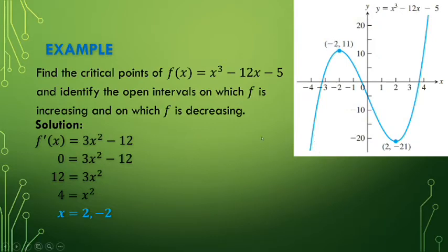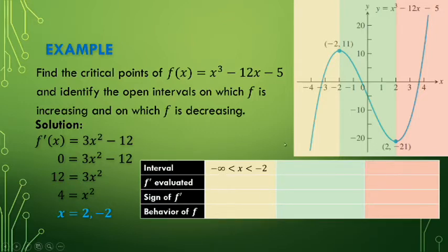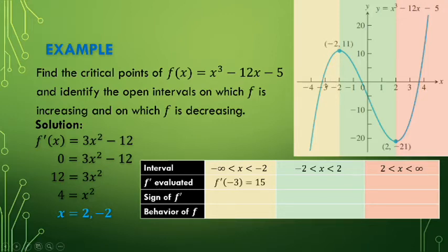Looking at the graph, we divide the domain — all real numbers — into open intervals: from negative infinity to -2, from -2 to 2, and from 2 to positive infinity. Evaluating f'(-3), which is closest to -2, gives positive 15 — the sign is positive, so since f' > 0, the behavior is increasing. We can see the curve is going up on that interval. Then f'(0) = -12, which is negative, so the slope is decreasing at x = 0.